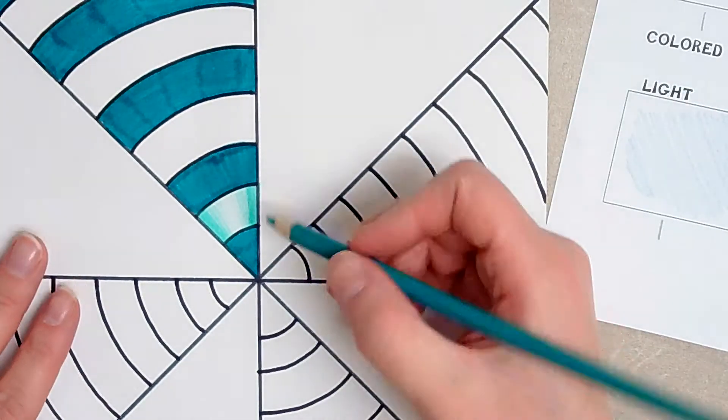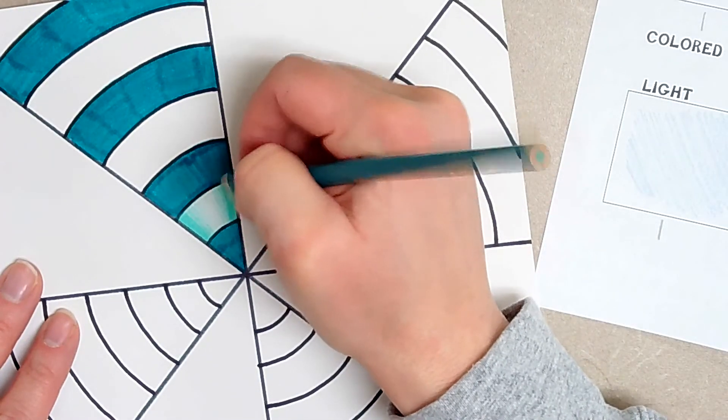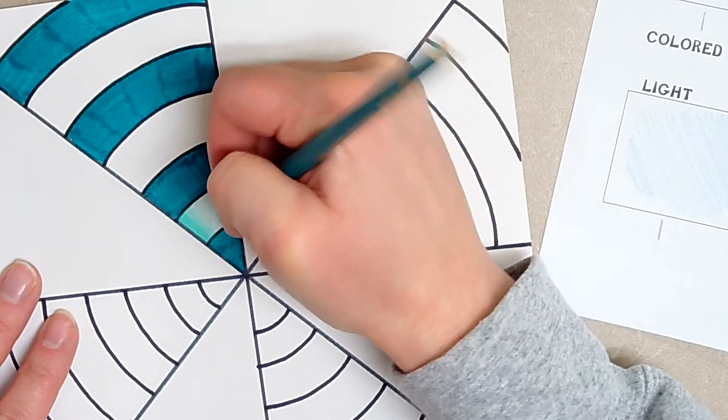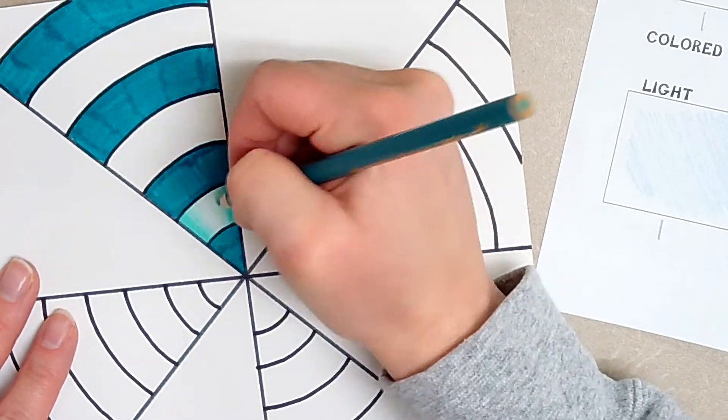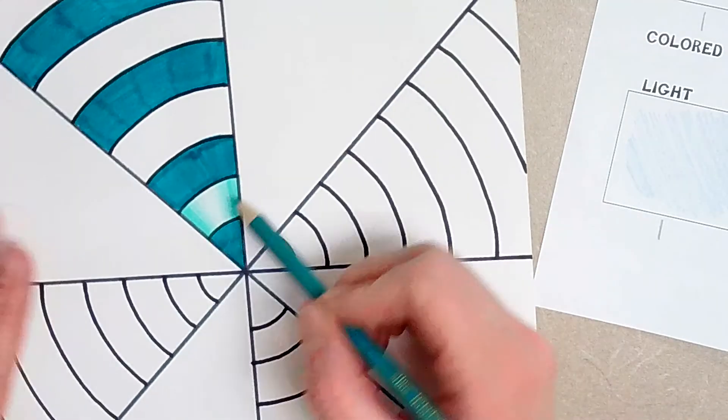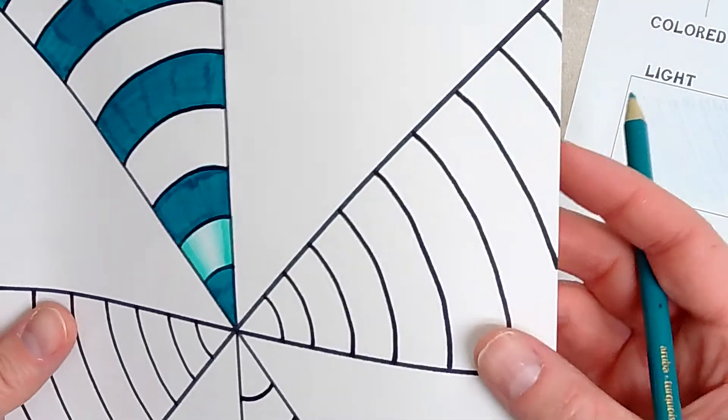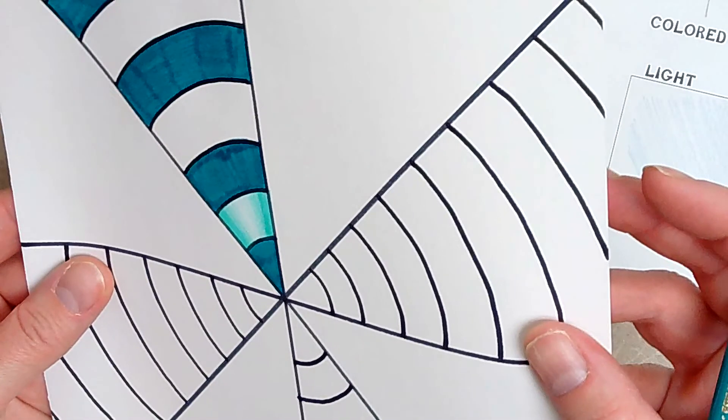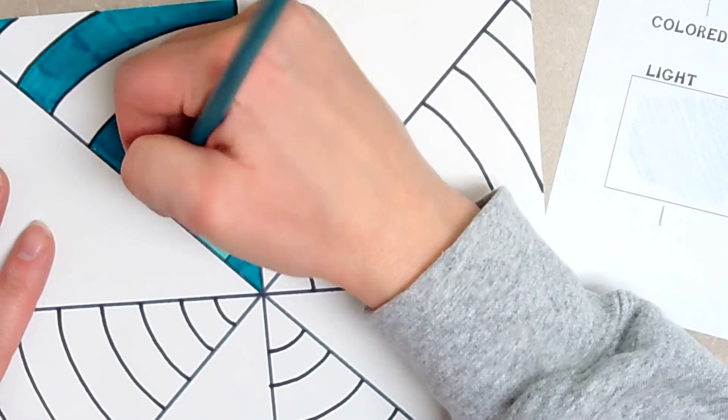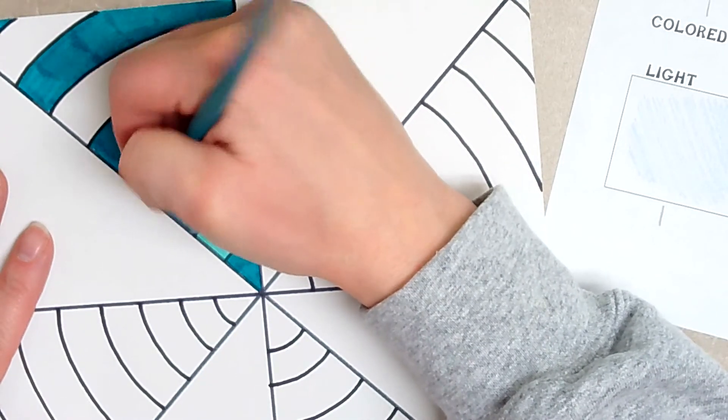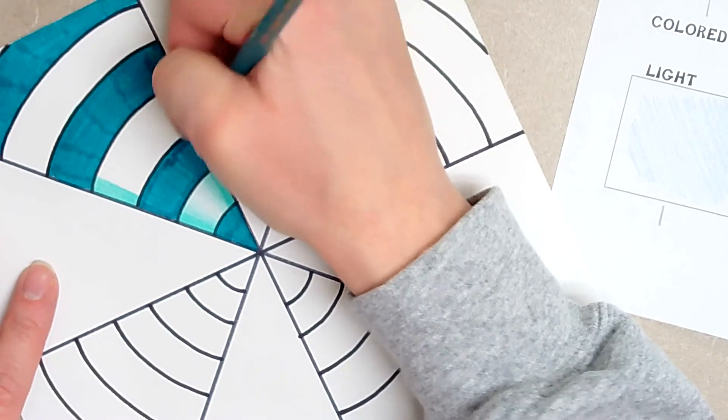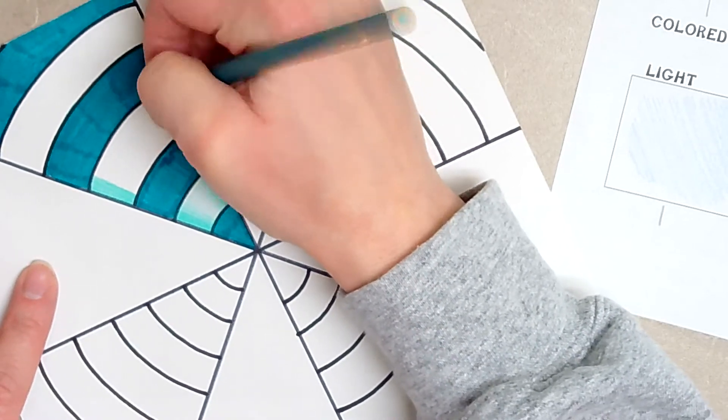So it should be a nice, smooth transition from dark to light. It shouldn't be just like a stripe. It needs to be a smooth transition. So if I kind of hold it up, you can see my shading. And then I'm going to come up here to the next one. And as your stripes get bigger, you're going to have more room to show those value scales.